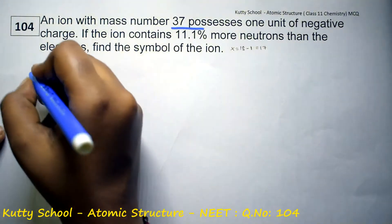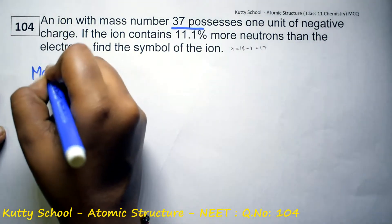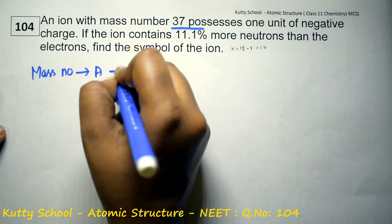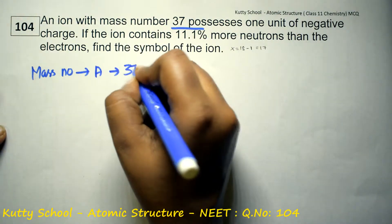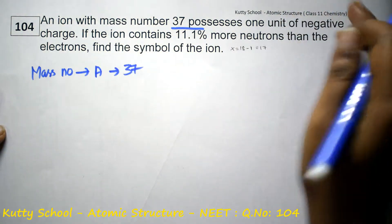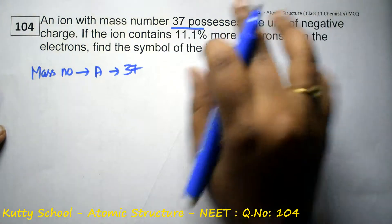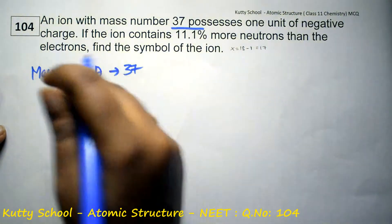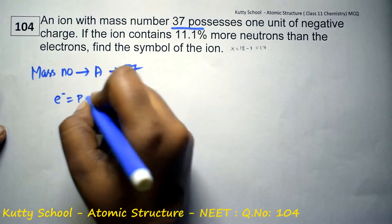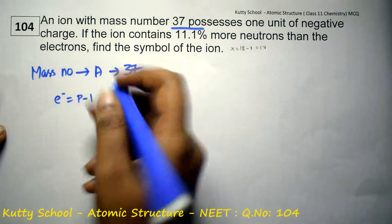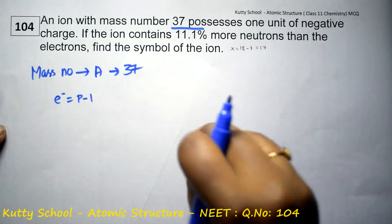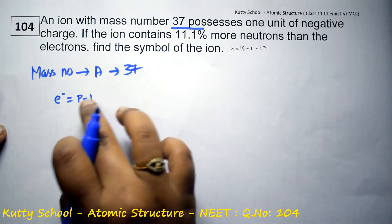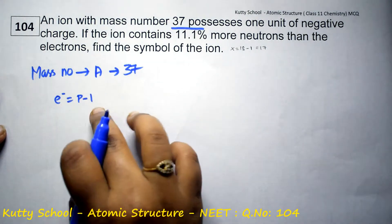First, the mass number is denoted by A, and A is equal to 37. Next, one unit of negative charge means electrons contain negative charge, so electrons equal protons minus 1. Therefore, electron is equal to proton minus 1.